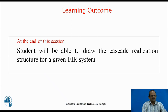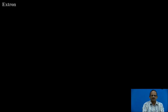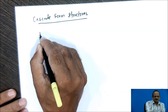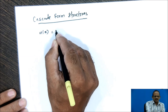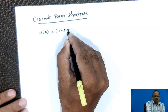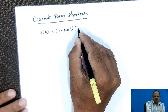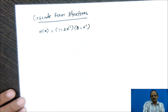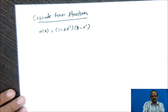Now I will discuss the cascade structures. Consider a transfer function H of z equal to 1 minus 2z raised to minus 1, into 3 minus z raised to minus 1. Let us think of the zeros of this transfer function. Pause this video for a minute and think about what the zeros are.